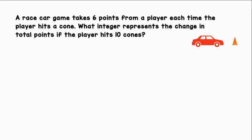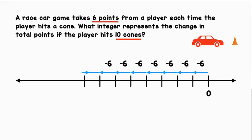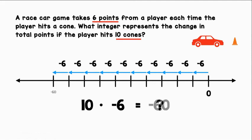A race car game takes six points from a player each time the player hits a cone. What integer represents the change in total points if the player hits ten cones? Let's use a horizontal number line to represent this situation. The player loses six points for one cone, but the player hit ten cones, so we have to take away six points ten times. We can represent this with ten times negative six, which gives us negative 60.